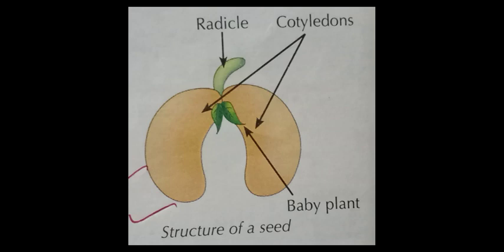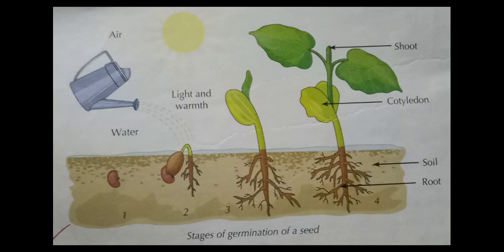When a seed sprouts, the cotyledons are the first leaves the plant has. Some plants have one cotyledon while others have two. An embryo is the baby plant inside the seed that grows into a new plant. Now, regarding the stages of germination: if seeds get the right amount of water, air, sunlight, and warmth, they produce a baby plant called a seedling. The process by which a seed grows into a seedling is called germination. Water helps soften the seed coat and converts stored food into a soluble substance.